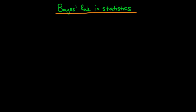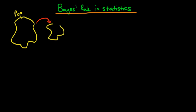In this video I want to talk about how Bayes' rule is used in statistics. Normally in statistics the sort of problem that we may have is that we have some sort of population and we'd like to know something about that population, but the problem is we don't have the entire population of data — we only have a sample. So what we'd like to do is apply some sort of mathematical function to that sample to help us find out something about the population.